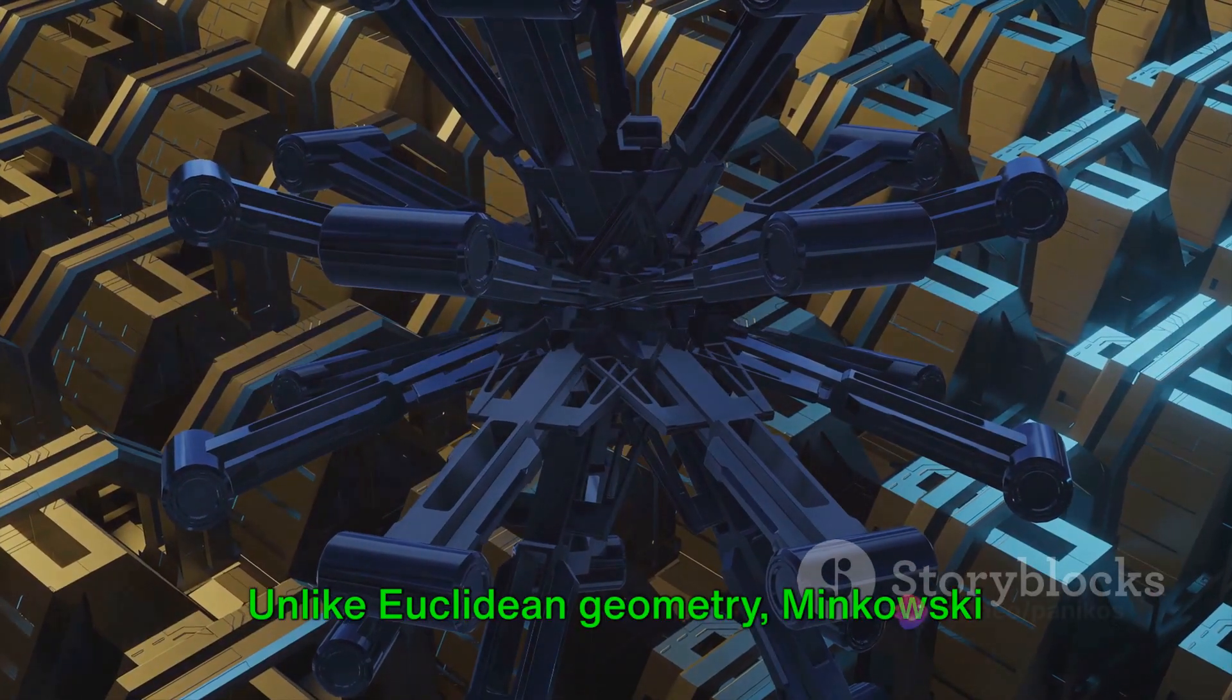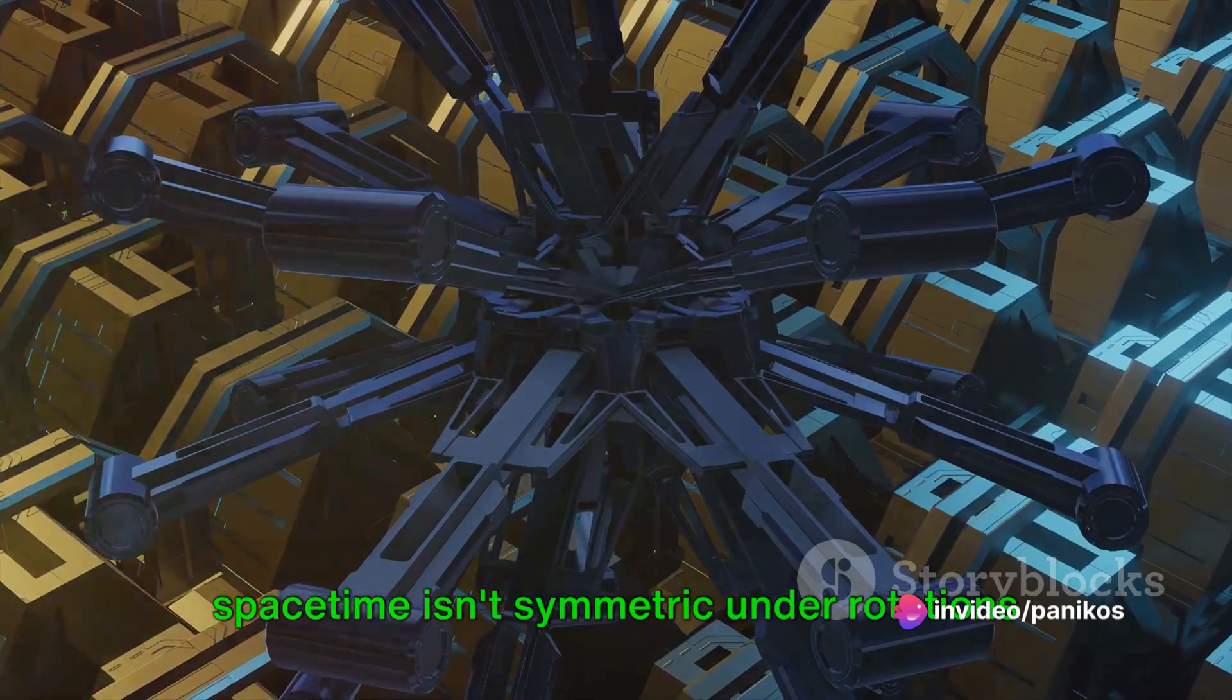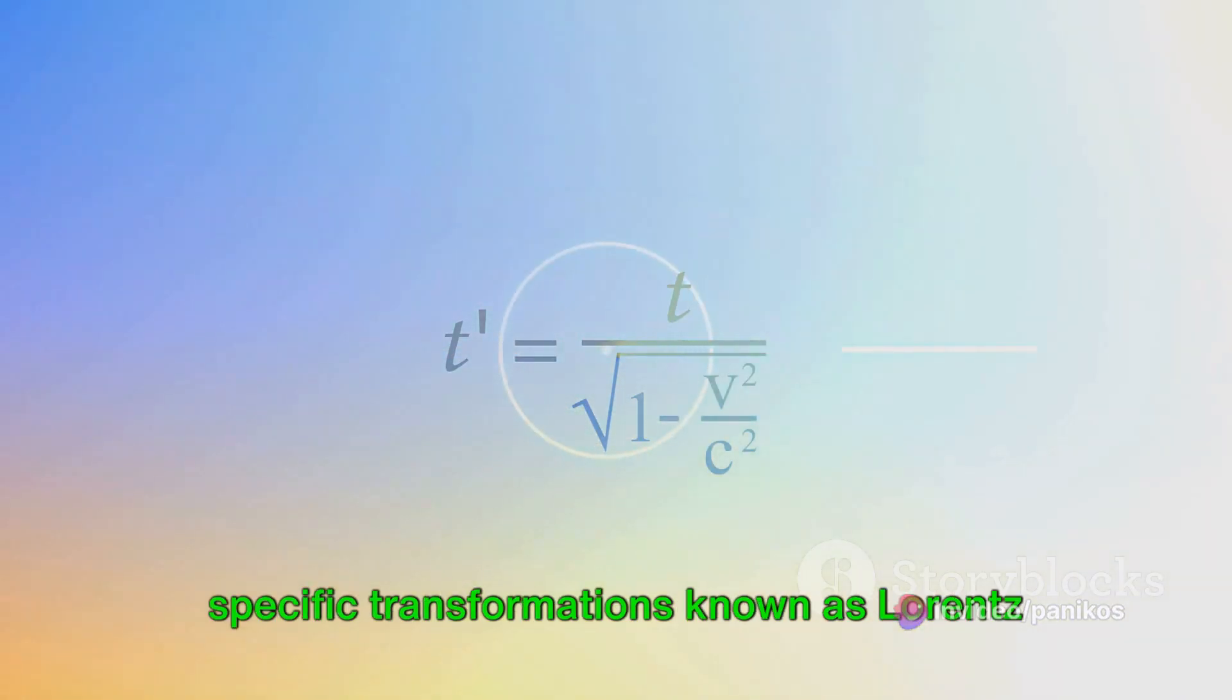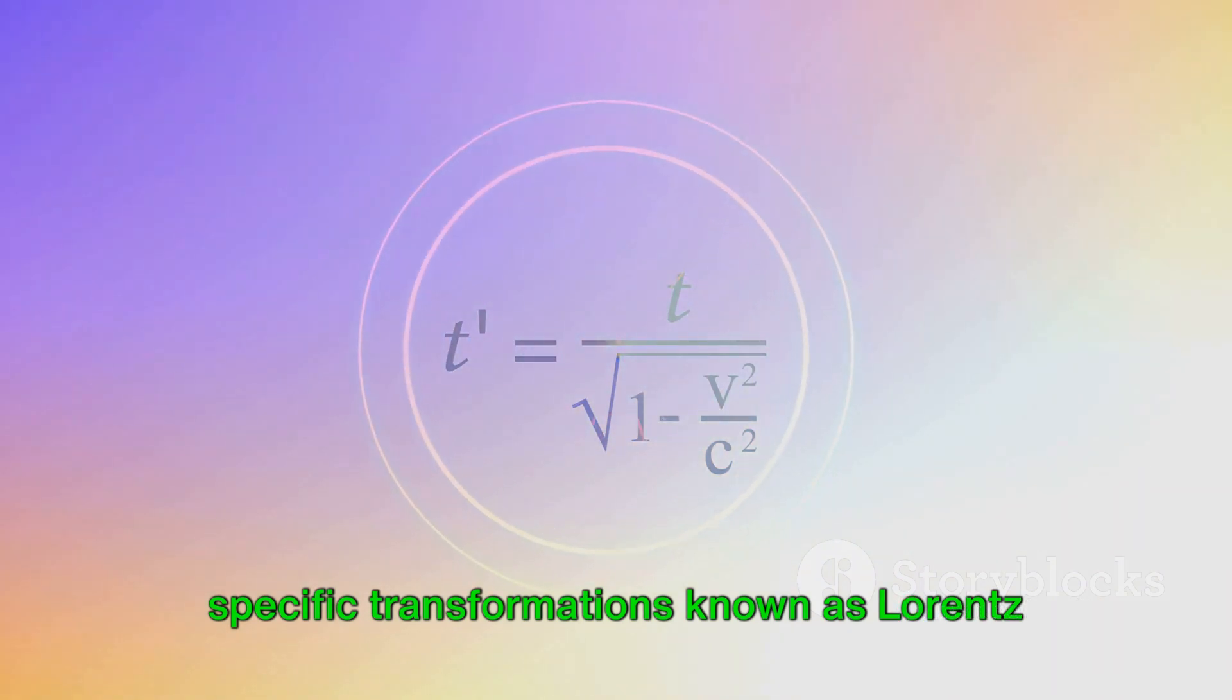Unlike Euclidean geometry, Minkowski spacetime isn't symmetric under rotations or reflections. Instead, it only transforms under specific transformations known as Lorentz transformations, the backbone of special relativity.